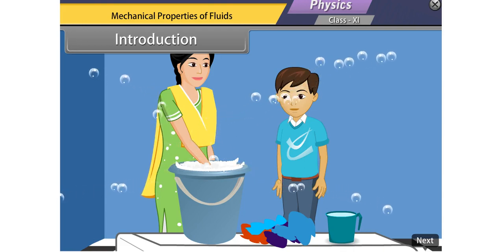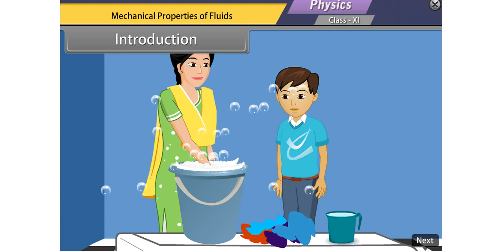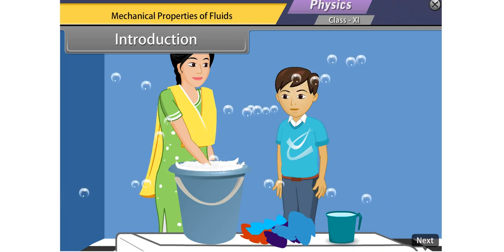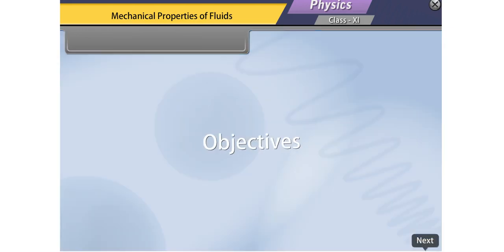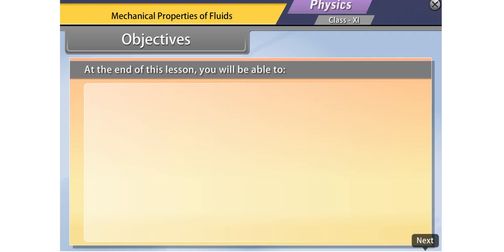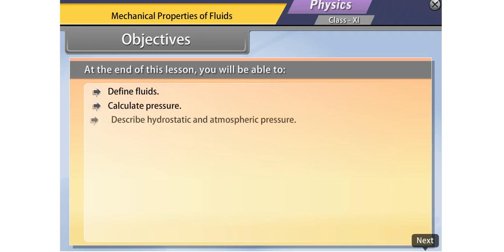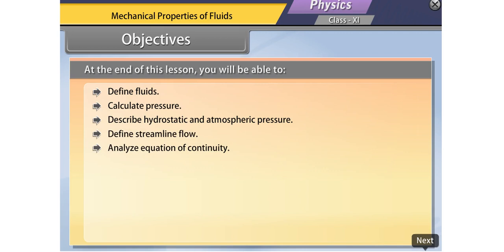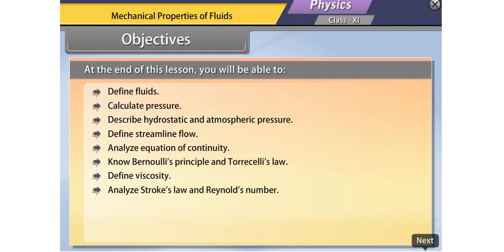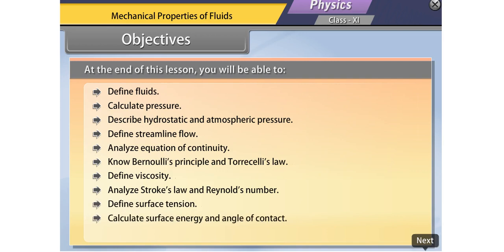Students, today we will study about fluids and their mechanical properties. At the end of this lesson, you will be able to: define fluids; calculate pressure; describe hydrostatic and atmospheric pressure; define streamline flow; analyze the equation of continuity; know Bernoulli's principle and Torricelli's law; define viscosity; analyze Stokes' law and Reynolds number; define surface tension; calculate surface energy and angle of contact; and know about phenomena based on surface tension.